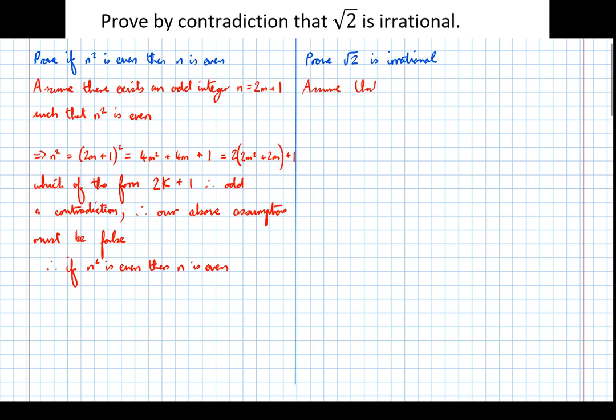Assume that root 2 is rational, i.e. that it can be written in the form a over b where a and b are integers with no common factors.